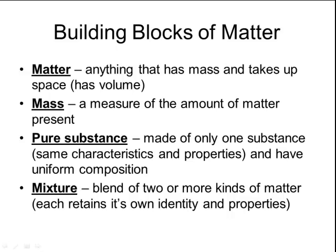Different from a pure substance is a mixture. A mixture is a blend of two or more kinds of matter, and each different type of matter retains its own identity and properties. When you take a sample from a mixture, you might get a slightly different composition — you might have more of one type of matter in one sample or more of a different type in another. So matter can be broken up into two distinct types: pure substances and mixtures.